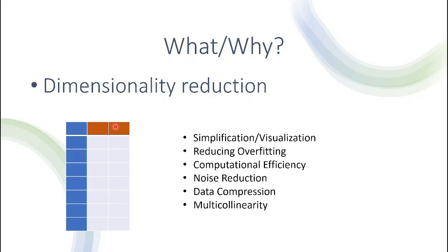Another reason is something called multicollinearity. This happens when your dataset has many features and some of them are highly correlated, meaning they represent almost the exact same data — one feature over another doesn't really help you, they kind of repeat themselves. So performing dimensionality reduction helps you avoid this kind of feature. Of course, these reasons can coexist with one another, and there may be other reasons not mentioned here — these are just the top ones.